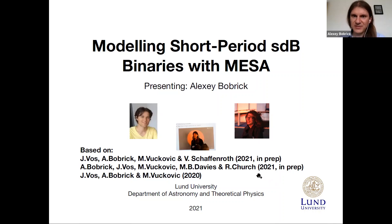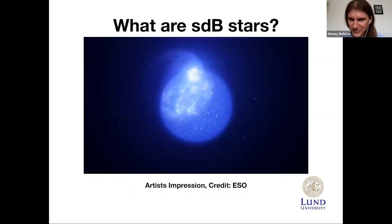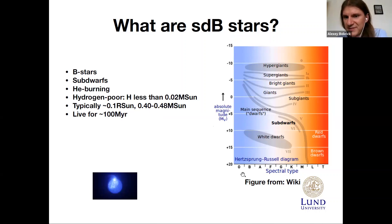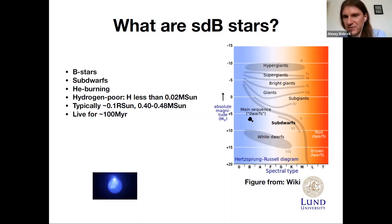To start off, let me explain what subdwarf B-stars are generally. There are really three ways to look at it. Here's an artist's impression: subdwarf B-stars are small blue bright stars, in this case also with stellar spots. From an observational perspective, subdwarf B-stars are stars of spectral class B — another way of saying they're blue — and they're subdwarfs, meaning they lie on the HR diagram below the main sequence stars, called dwarfs. So they're dimmer than main sequence stars.